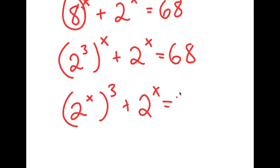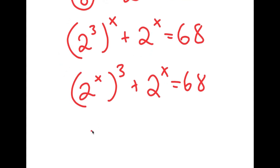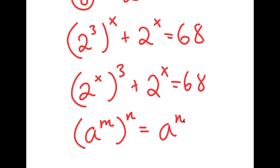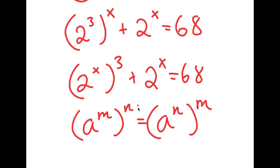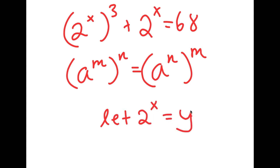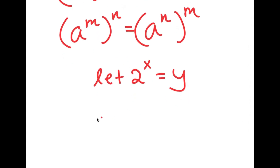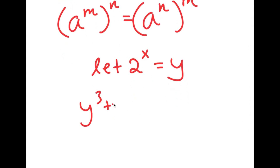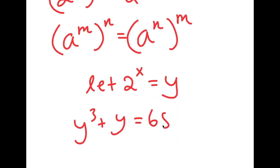So I have this plus 2 to the power of x is equal to 68. I can do this because if I have something in the form a to the power of m to the power of n, this is equal to a to the power of n to the power of m. From here I'm going to let 2 to the power of x equal to the variable y, so if I substitute in y for 2 to the power of x, I get y to the power of 3 plus y is equal to 68.